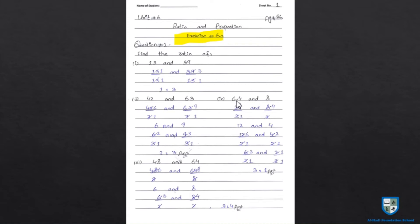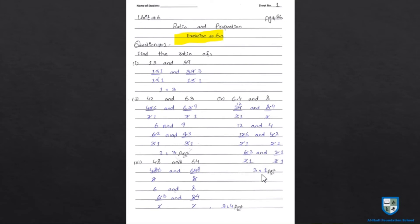Part 4: 6.4 and 8 — यह multiplication को show कर रहा है: 6 dot 8, multiply करेंगे तो 24. 24 divided by 2 and 8 divided by 2 — 12 and 4. 12 divided by 2 — 6 and 4. मजीद simplify करेंगे: 2 से 6 and 2 — 3's are 6, 1's are 2. 3 is to 1 is the most simplest form of 24 and 8. Answer is 3 is to 1.